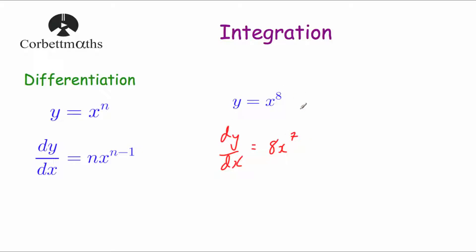Now if we want to go backwards and find out what y is, that process is called integration. To go backwards, we add 1 to the power and we divide by the new power. So for instance if we had 8x to the power of 7, we would add 1 to the power to get x to the power of 8, then divide 8 by the new power — 8 divided by 8 is 1 — so the answer would be x to the power of 8.